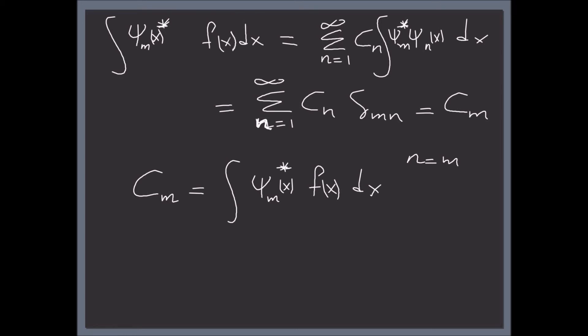In the next video we're going to work more on this, and these four properties will be used over and over. The Kronecker delta — I'm not going to explain it again in future videos; I can just refer back to video 9 if you want to see how we derive it.